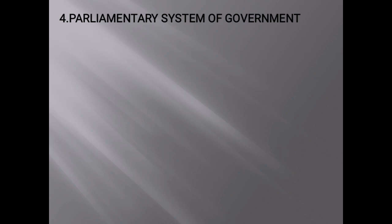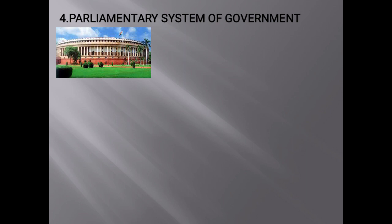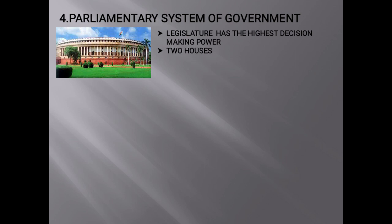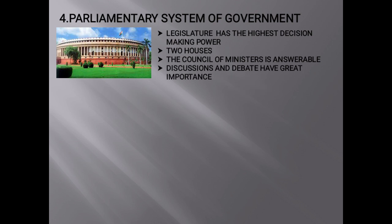Parliamentary System of Government. The Indian Constitution has provided for a Parliamentary System of Government. In such a system, the Parliament — i.e., the Legislature — has the highest decision-making power. Indian Parliament includes the President, Lok Sabha or the House of the People, and Rajya Sabha or the Council of States. The Council of Ministers that runs the administration emerges from the Lok Sabha and is answerable to Lok Sabha for all its decisions. In Parliamentary Democracy, the discussions and debates that take place in the Parliament have great significance.